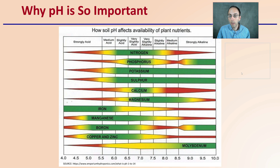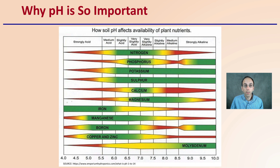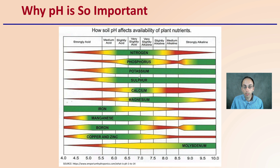So why is pH so important? pH is so important because if you look at this image here, it has a great graphical representation of how soil pH affects availability of plant nutrients. If we're looking at a pH of 7, we can see that those in green are greatest available around that particular pH. So in comparison, we can see that nitrogen, phosphorus, potassium, sulfur, calcium, and magnesium are relatively plant-available at a pH of 7.